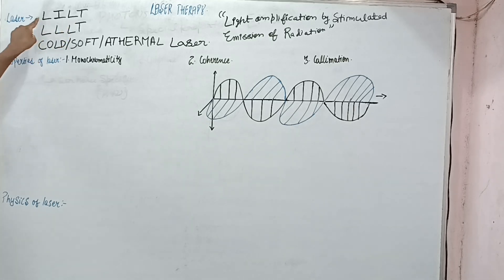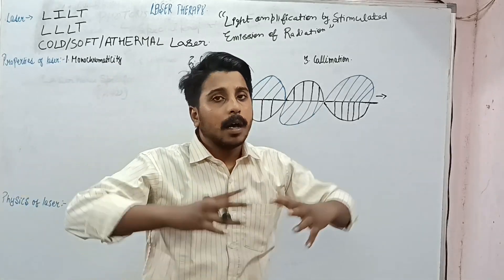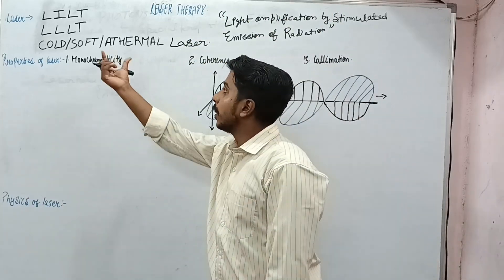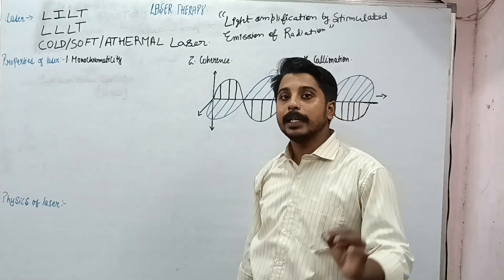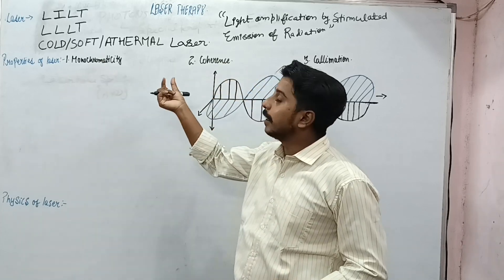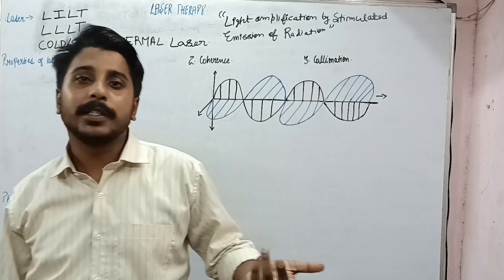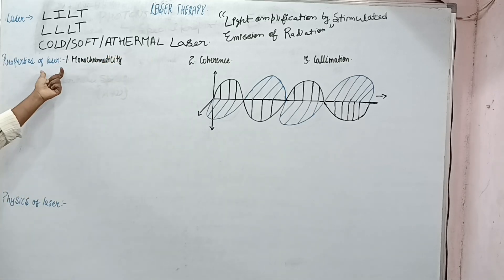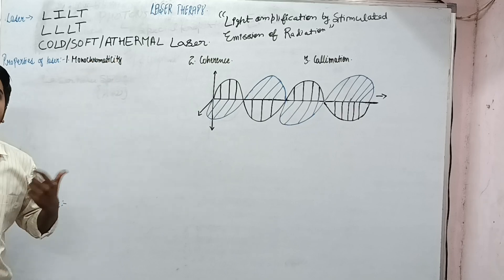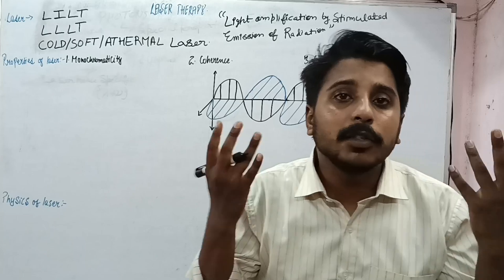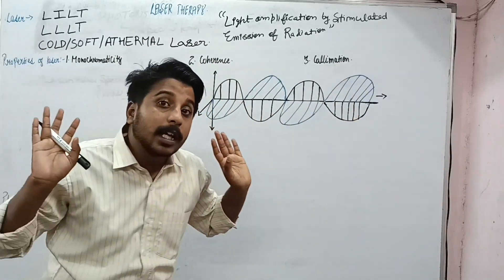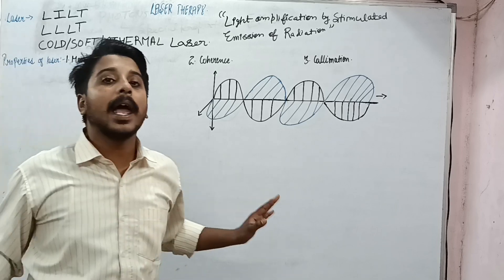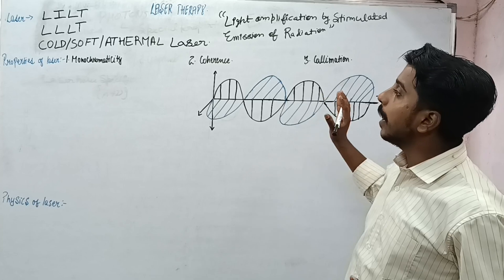What are its other names? First is LILT — Low Intensity Laser Therapy — because lasers can be of very high intensity, but here we use very low intensity. Next is LLT — Low Level Laser Therapy — which is the same as the previous one. Other names are cold laser, soft laser, or athermal laser, because we are using very low intensity which does not produce any thermal effect.